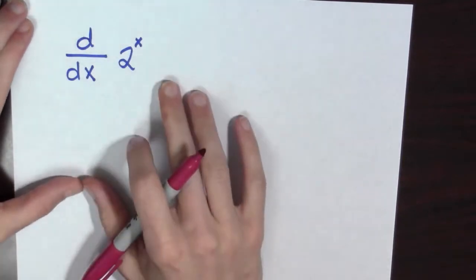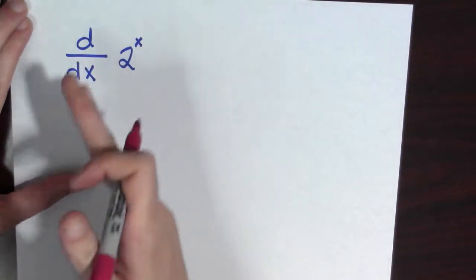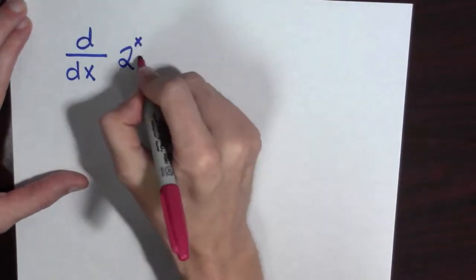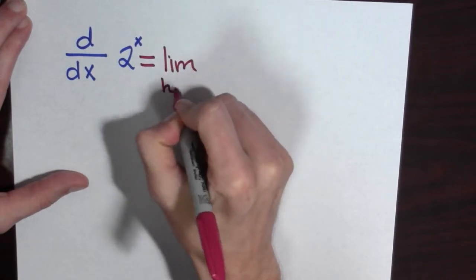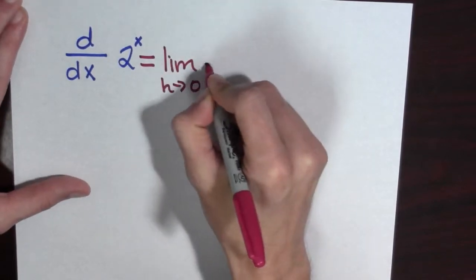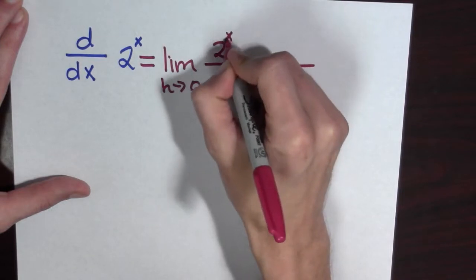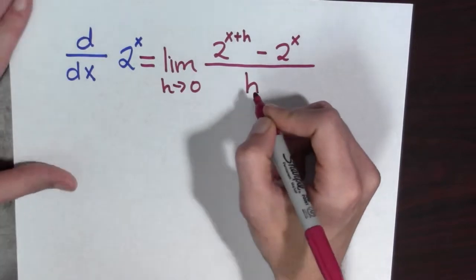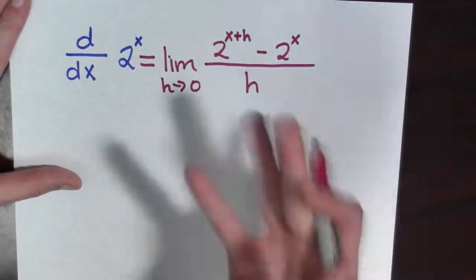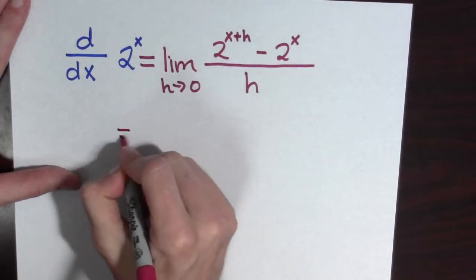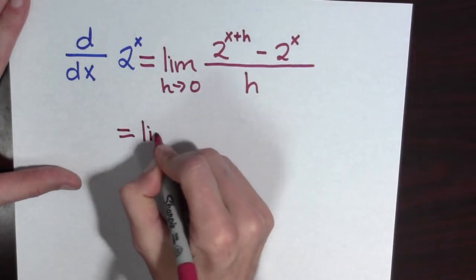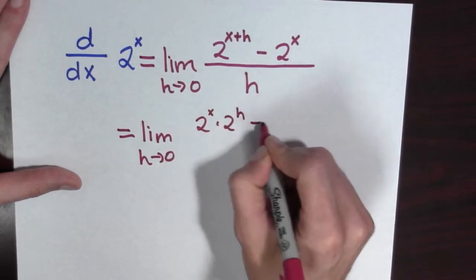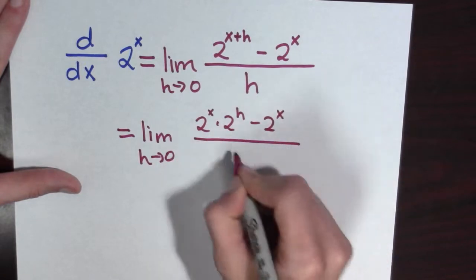Maybe the easiest exponential function is 2 to the x. So let's see if we can take the derivative of 2 to the x. This is going to equal the limit as h goes to 0 of 2 to the x plus h minus 2 to the x, all over h. I can simplify this a bit — I have the limit as h goes to 0 of 2 to the x times 2 to the h, minus 2 to the x, all over h.